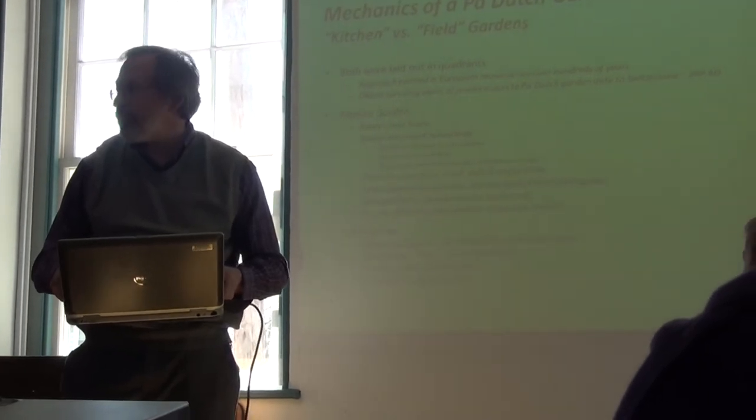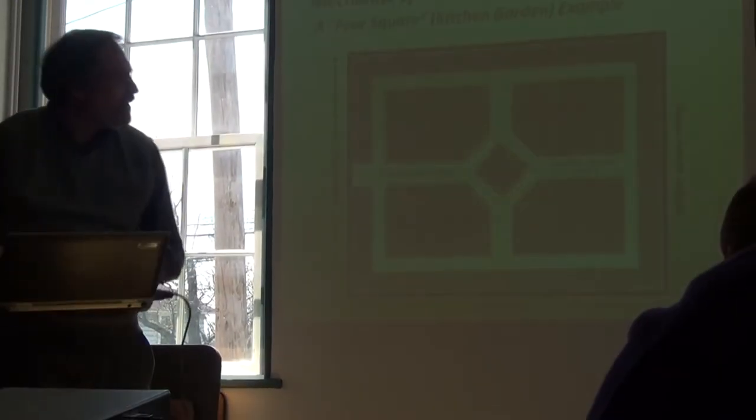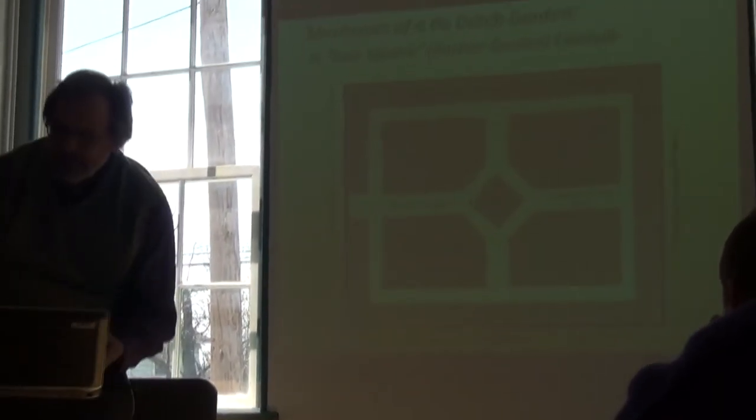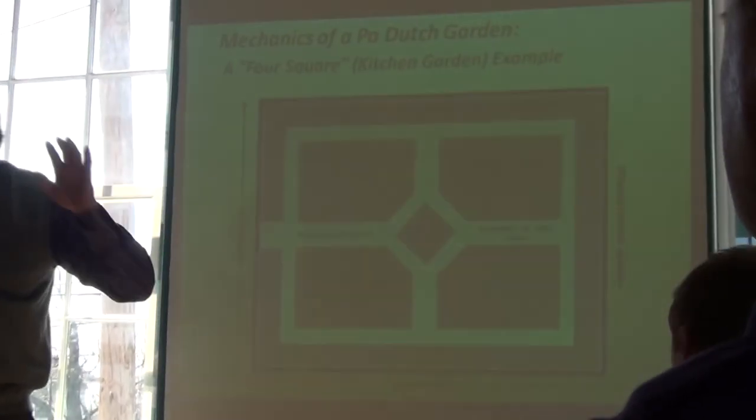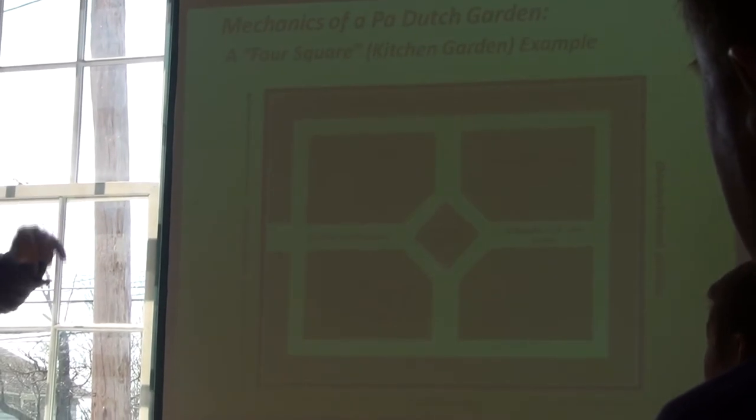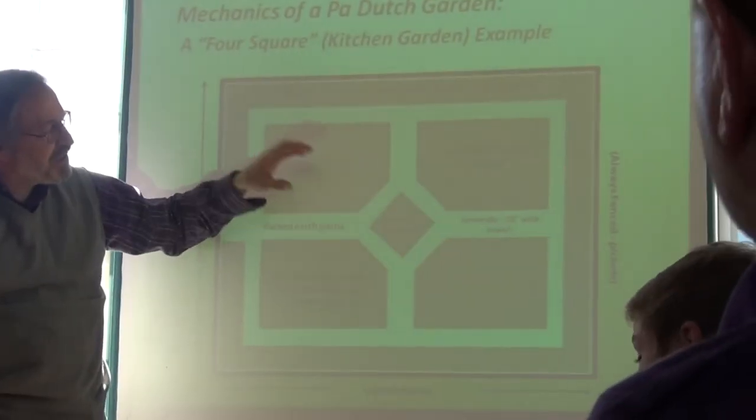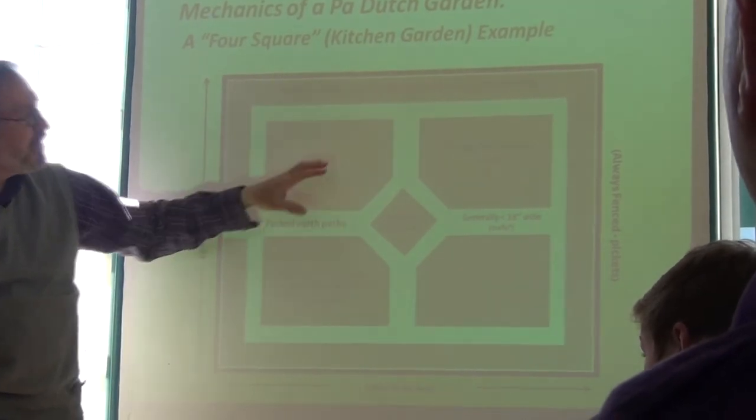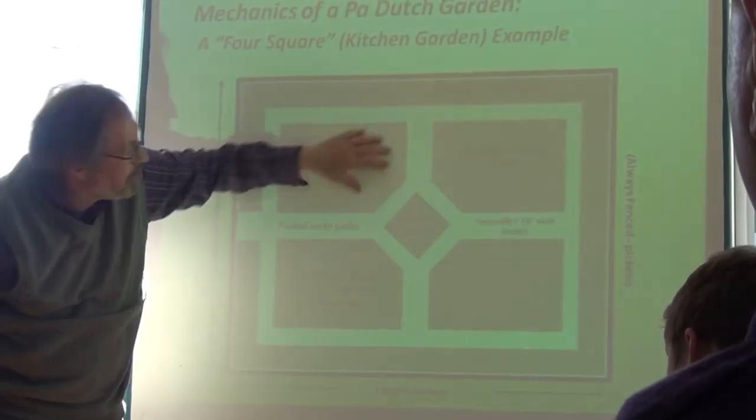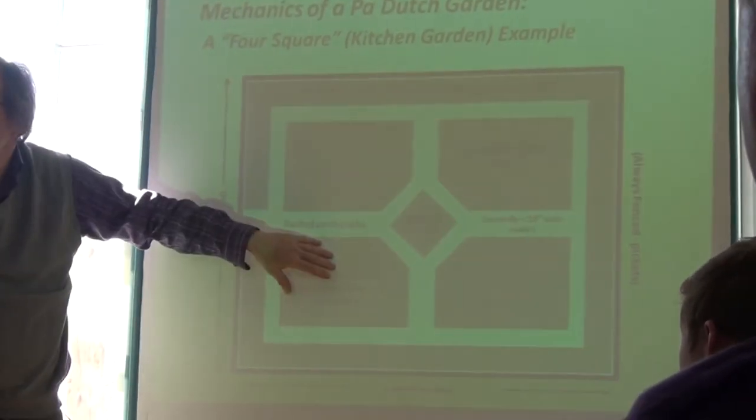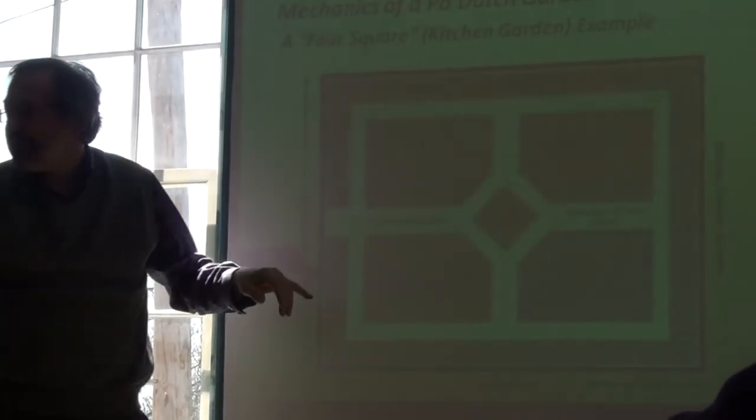Generally managed entirely by the men. I'm okay with that because I have an attraction to the tiller. Here's a picture, I don't know how well you can see it. I'm going to try to walk you through this. This is a typical classic four square Pennsylvania Dutch garden, four square because these four areas here is where the vegetables were being grown.